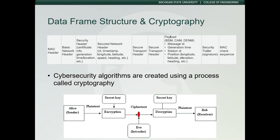Hypothetically, let's say Eve is Bob's wife, and she's suspicious that Bob is having an affair with Alice because he has a history of it. Under certain circumstances, even if Eve had the background knowledge and knew of the encryption methods used, she would still be unable to see the contents without the key.